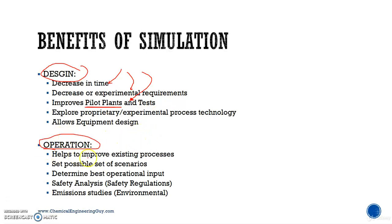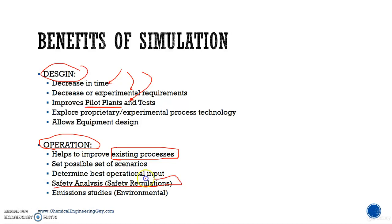For operations, process simulation helps us improve existing processes. If you have a process, you can simulate it and check out what-if scenarios — eventually achieving a decrease in heat duty or an increase in purity. It also helps with safety analysis: checking which species, streams, or unit operations are in hazard, and plenty of other applications.